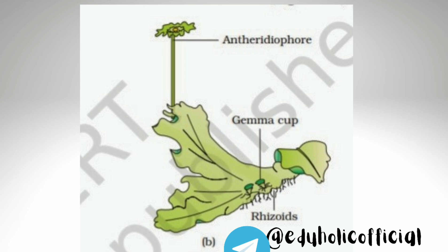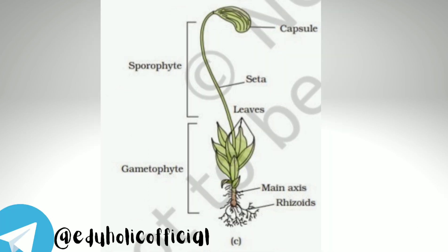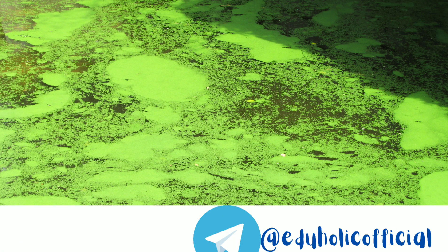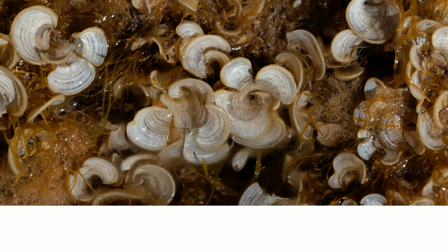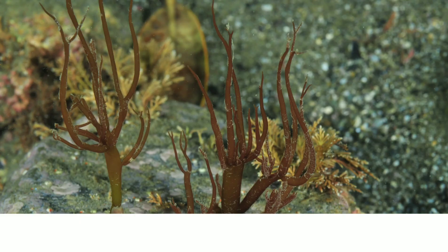Bryophytes in general are of little economic importance, but some mosses provide food for herbaceous mammals, birds, and other animals. Species of Sphagnum, a moss, provide peat that has long been used as fuel and as packing material for transshipment of living material because of their capacity to hold water. Mosses along with lichens are the first organisms to colonize rocks and are of great ecological importance. They decompose rocks, making the substrate suitable for growth of higher plants, and since mosses form dense mats on soil, they reduce the impact of falling rain and prevent soil erosion.